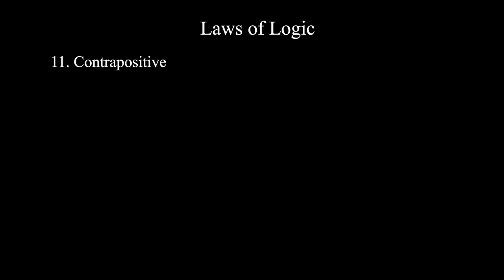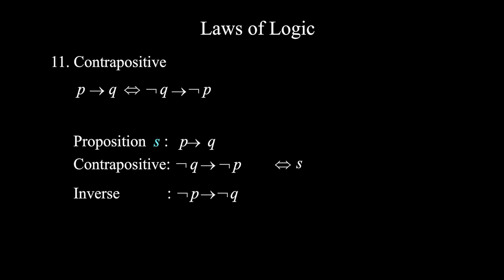Number eleven, contrapositive. If p then q is equivalent to if not q then not p. Implication is not commutative. If p then q is not equivalent to if q then p. But it is equivalent to when you put not to the variables: if not q then not p. Here's some terminologies. Proposition s: if p then q. Contrapositive: if not q then not p. These two are equivalent. The inverse is if not p then not q. The converse is if q then p. These latter two are not equivalent to if p then q.